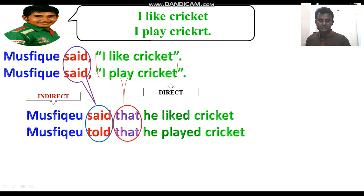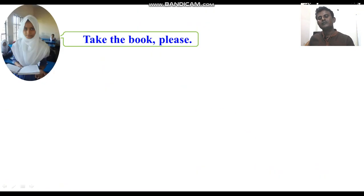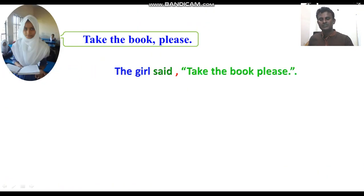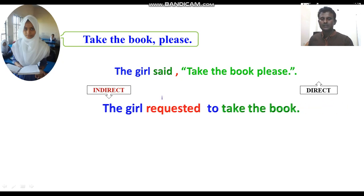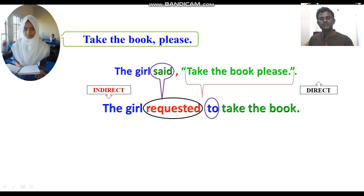For example: 'The girl said, take the book please' becomes 'The girl requested to take the book.' Here 'said' has become 'requested' because the reported speech indicates a request, and the inverted comma is replaced with 'to'.